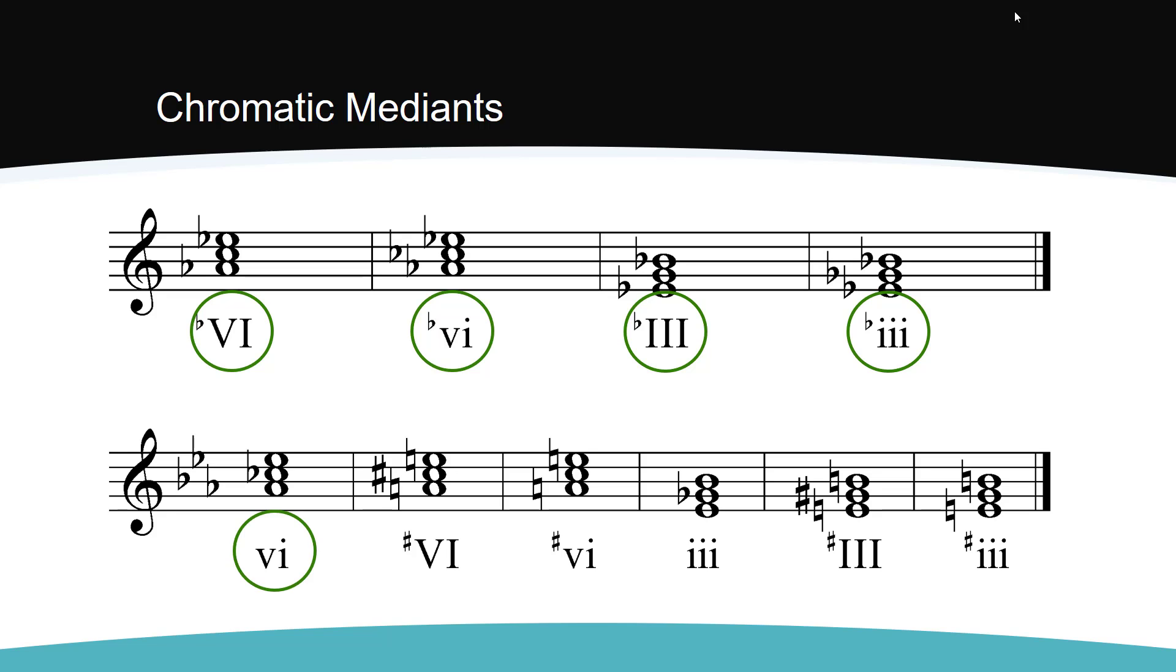In minor, we can have the minor 6 chord, a major 6 chord built on the raised 6th scale degree, a minor 6 chord built on the raised 6th scale degree, a minor 3 chord, a major 3 chord built on the raised 3rd scale degree, and a minor 3rd chord built on the raised 3rd scale degree.